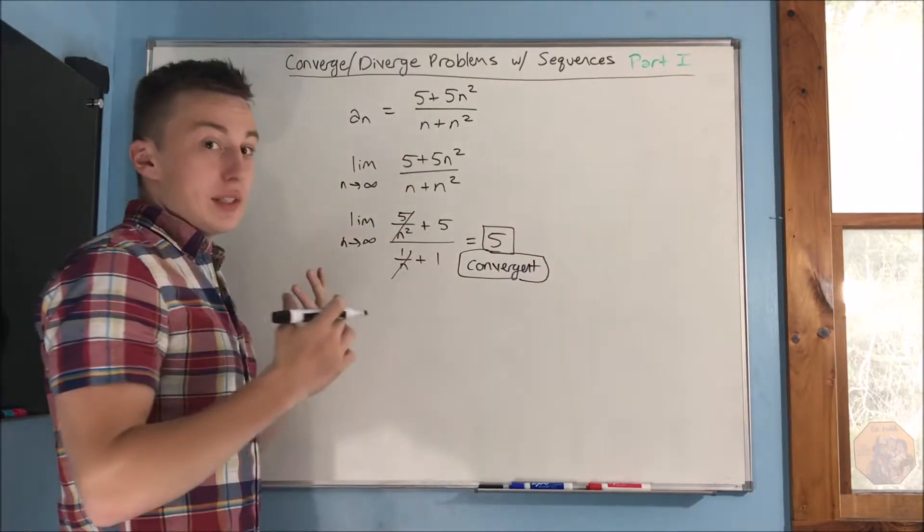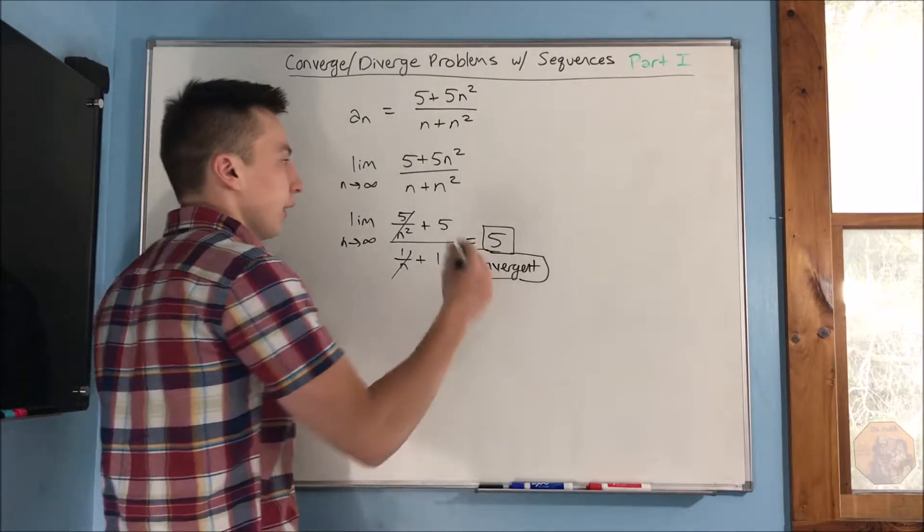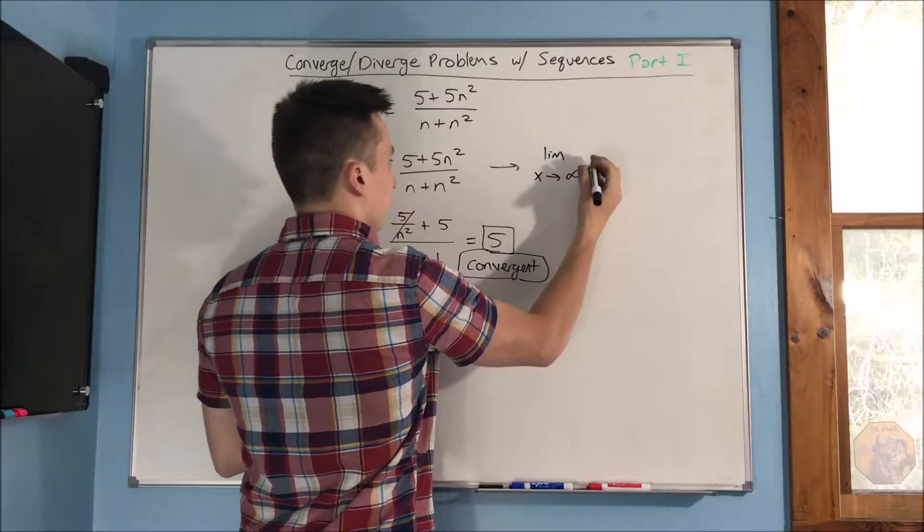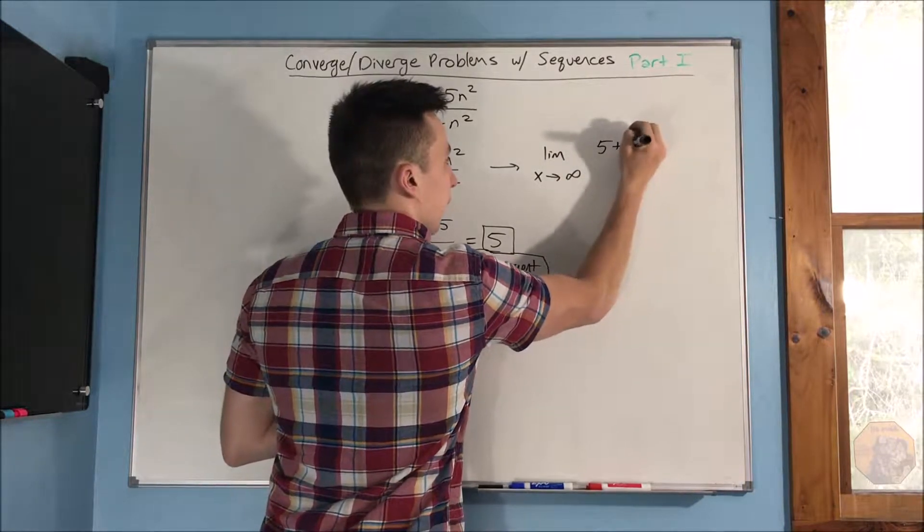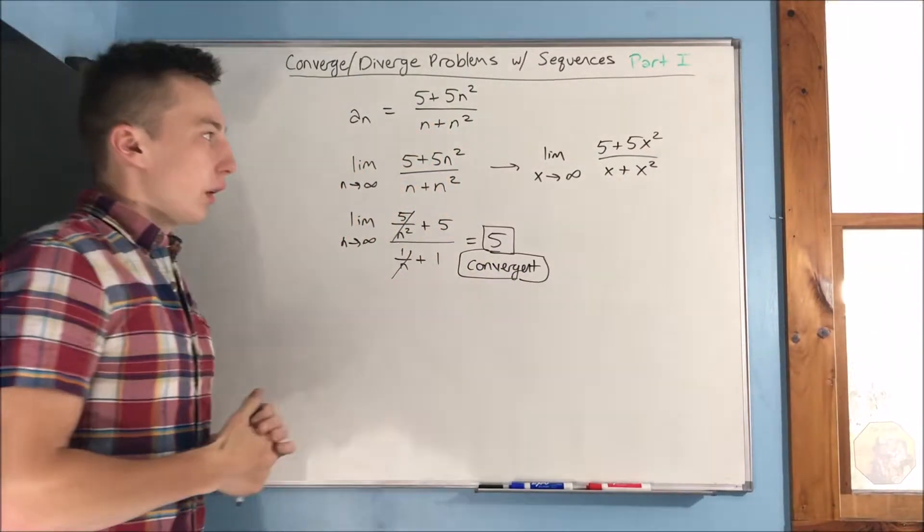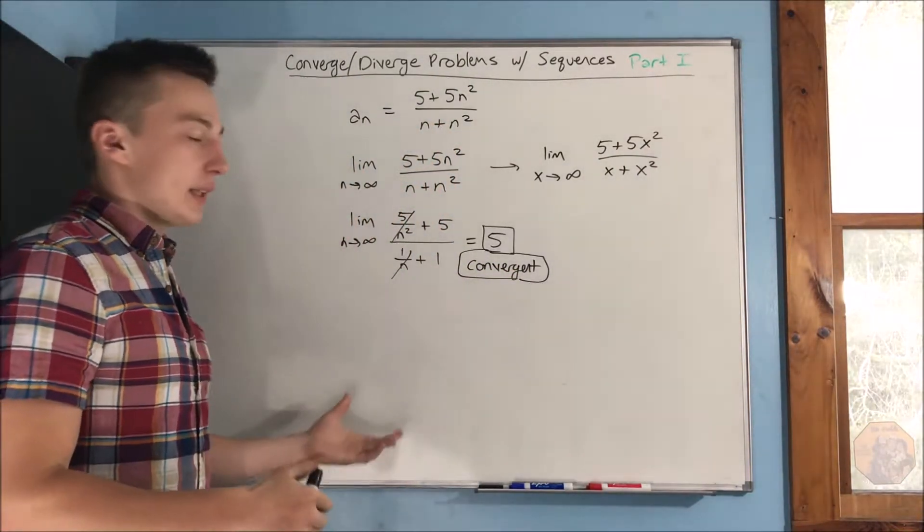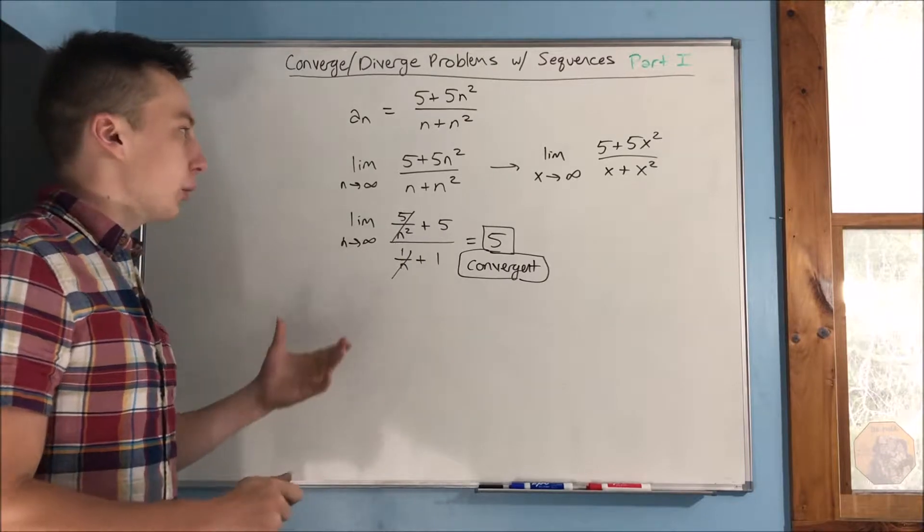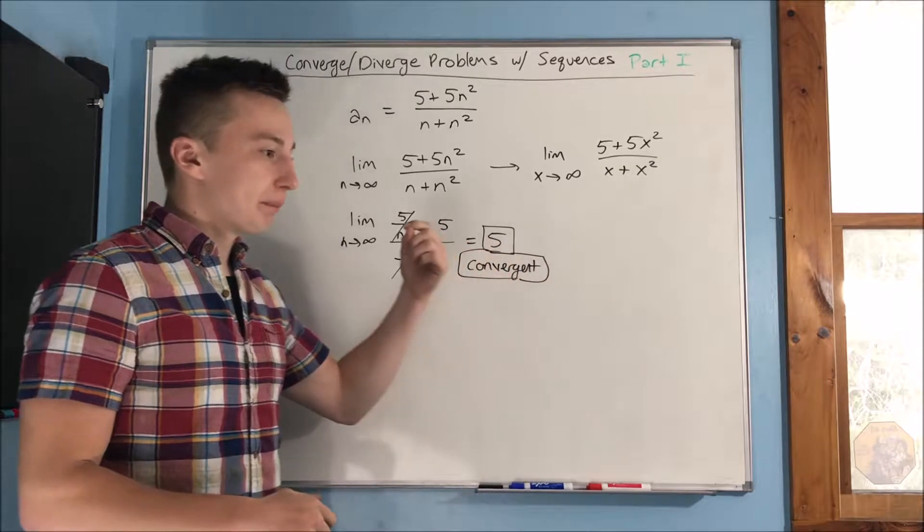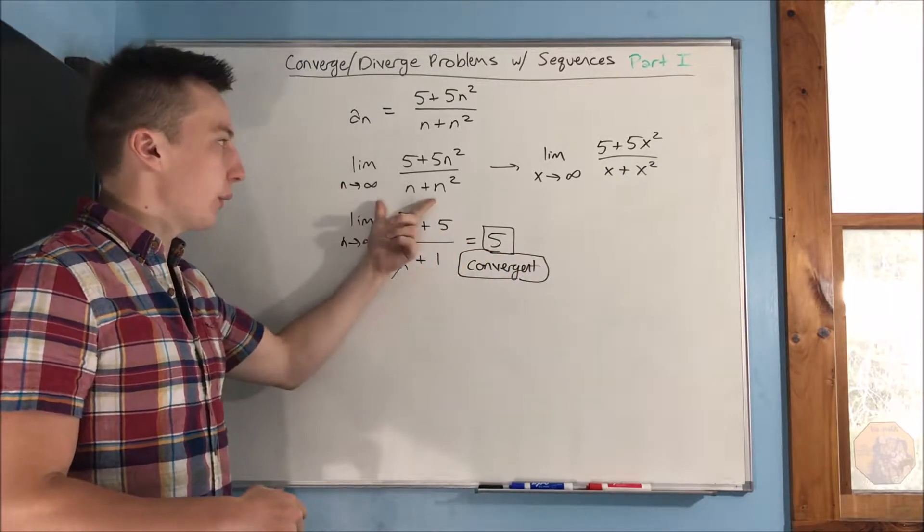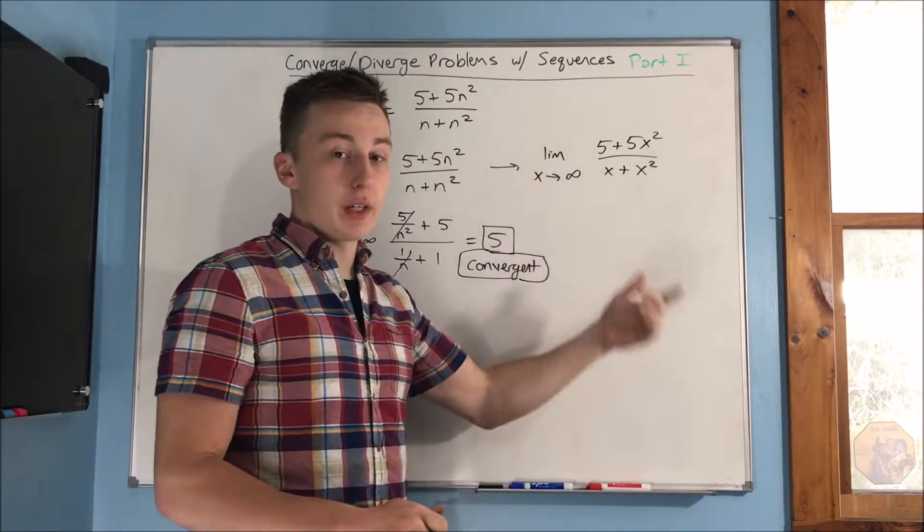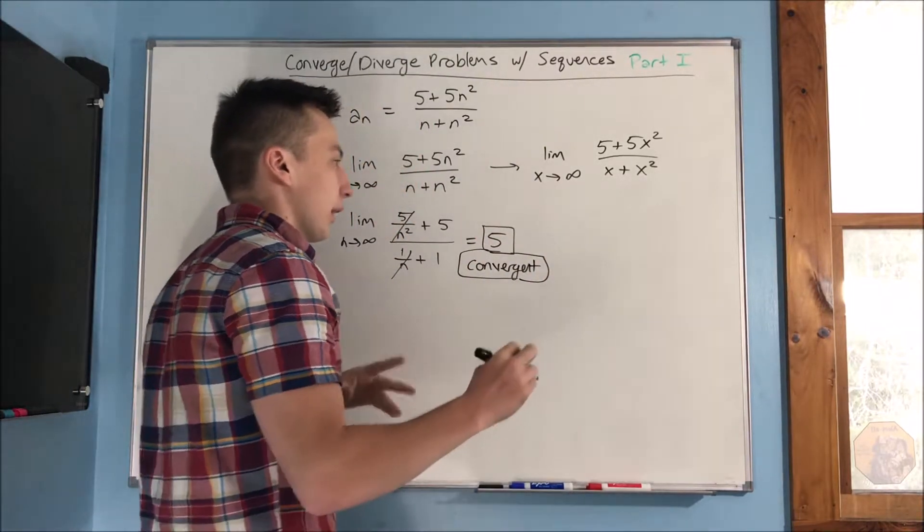Another way you can do it is the calculus way. You can compare this to the limit as x approaches infinity of 5 plus 5x squared over x plus x squared. And as I said in the last video, we're not able to, when we're going to use L'Hopital, because that's what I'm talking about here, we're going to use L'Hopital's rule, we're not able to do that with sequences, because L'Hopital's rule only applies to a function with a real variable. So it doesn't apply to sequences, whatever.